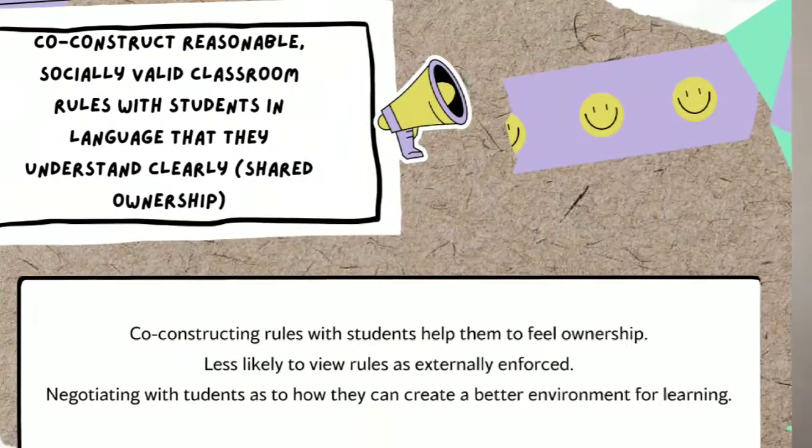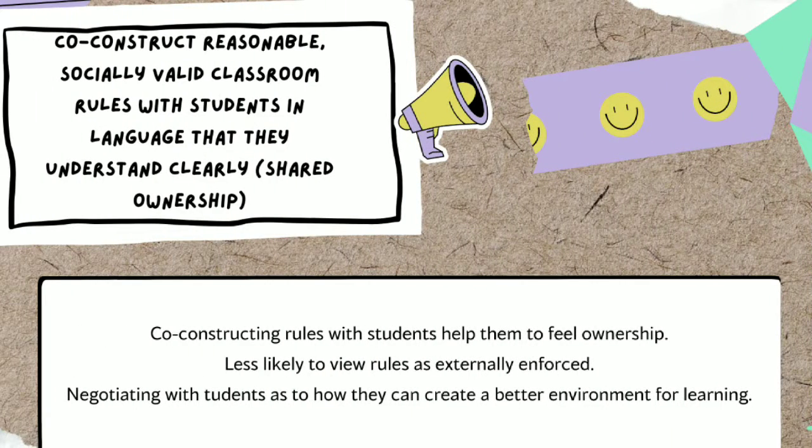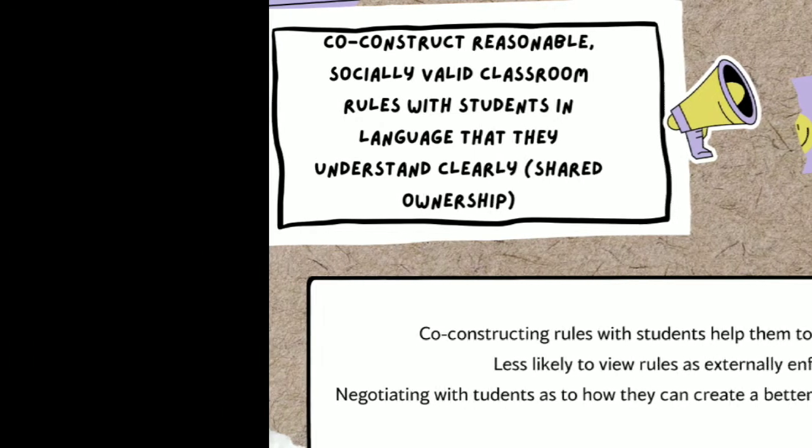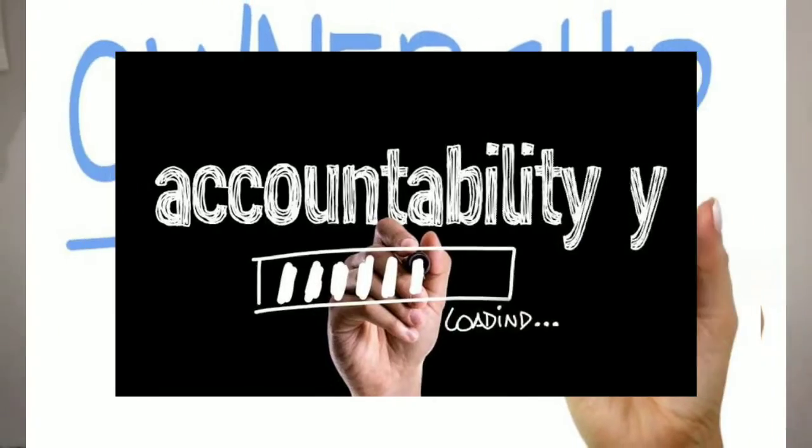The first structure is what we call shared ownership. We should co-construct reasonable, socially valid classroom rules with students in language that they understand clearly. When we co-construct classroom rules with our students, they feel a sense of ownership, accountability, and authority. They're less likely to view the rules as externally enforced, so we should ask for their suggestions while guiding them to also create rules that we require.